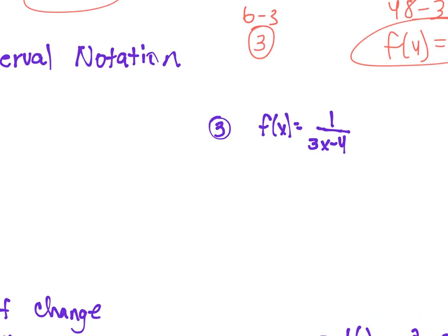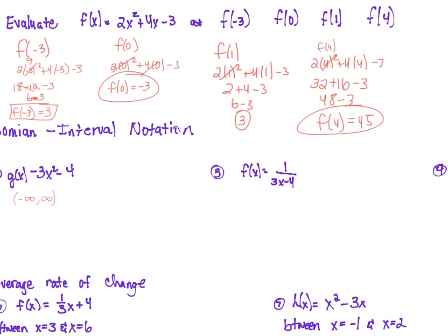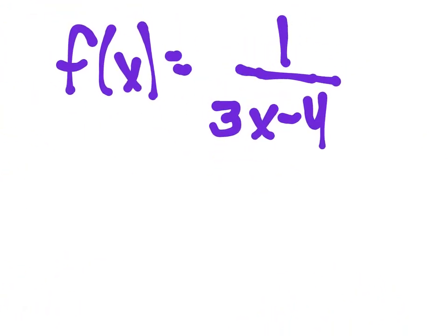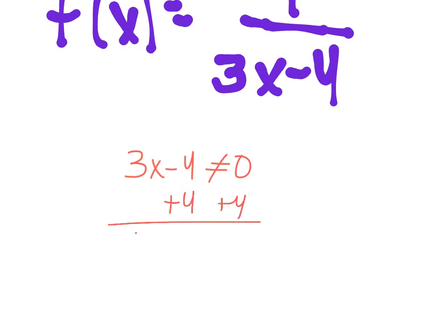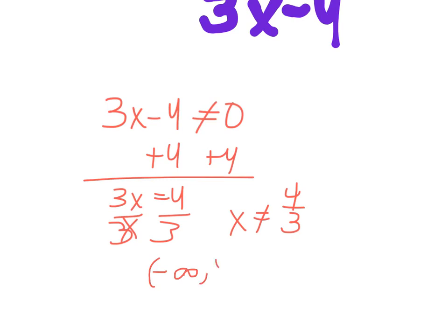For number 3, the rule being broken is there's a variable in the denominator. I have to find what number makes the denominator 0: 3x minus 4 equals 0, add 4 to both sides, 3x equals 4, divide by 3 — x cannot be 4 over 3. In interval notation: negative infinity to 4/3, parenthesis, union, parenthesis 4/3 to infinity. I can use any number in the world except 4 thirds.